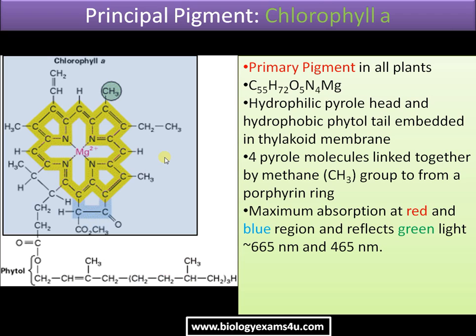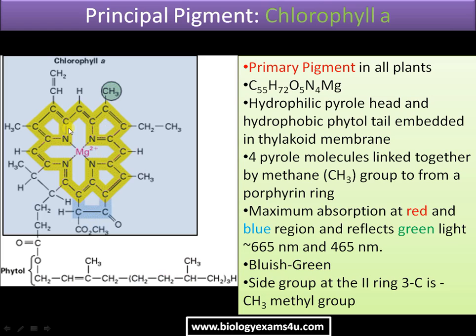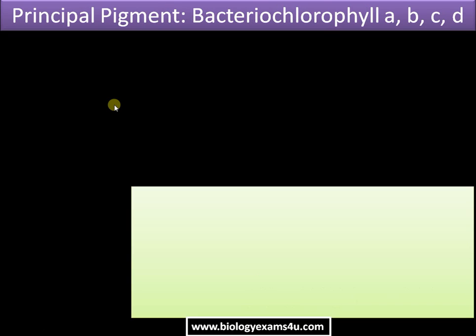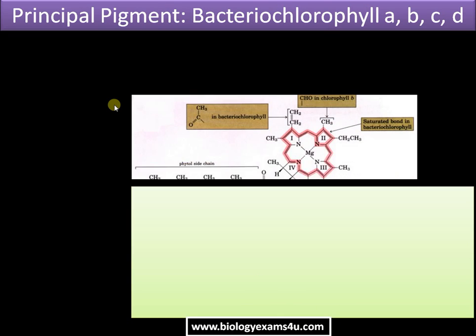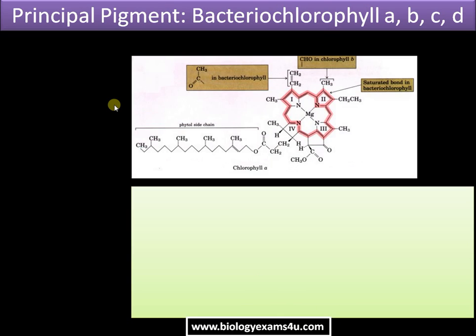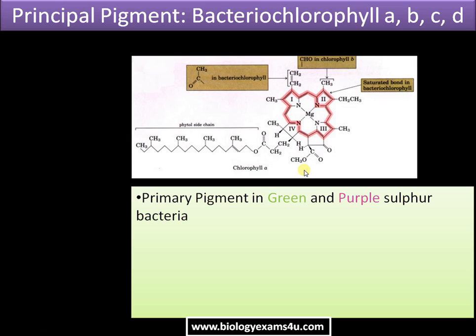Chlorophyll a has maximum absorption in the red and blue region and reflects green light — that is why leaves appear green. It is a bluish-green pigment. The side group at the second ring is a methyl group, that is a CH3 group. The second principal pigment is bacterial chlorophyll, which is the primary pigment in green and purple sulfur bacteria.